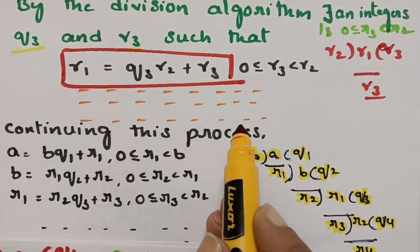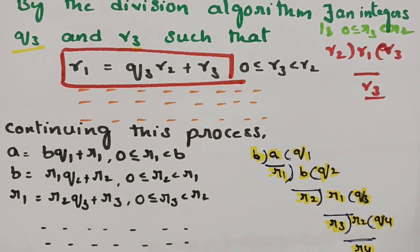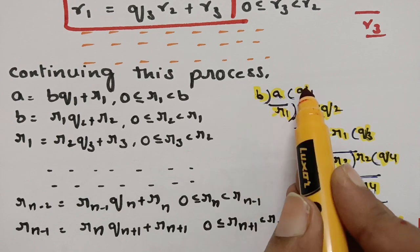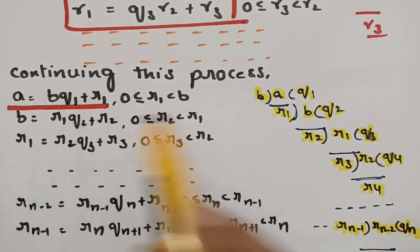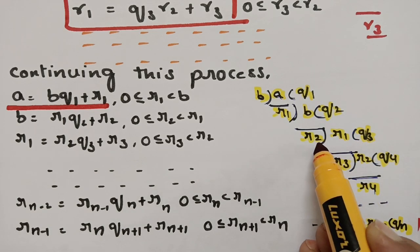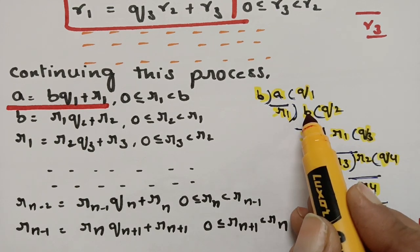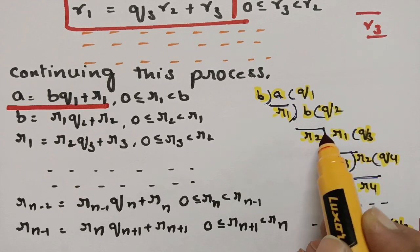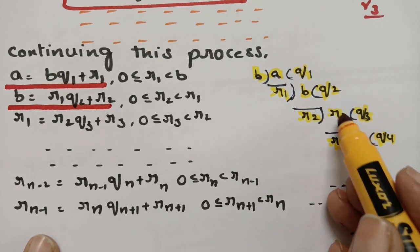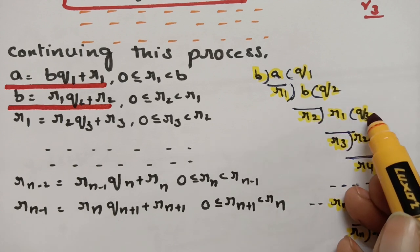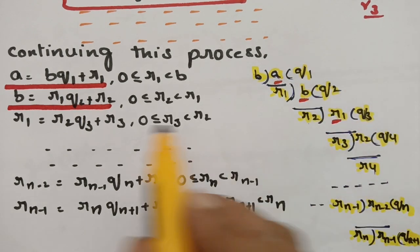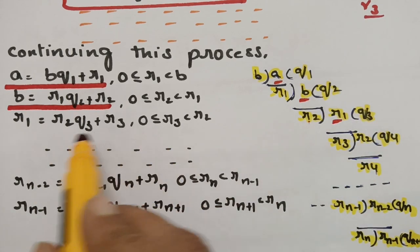If you continue this process: A = BQ1 + R1 is the first equation; B = R1·Q2 + R2 is the second equation; R1 = R2·Q3 + R3 is the third equation. Continuing, at the last step we have Rn−2 = Rn−1·Qn + Rn, and then Rn−1 = Rn·Qn+1 + Rn+1.